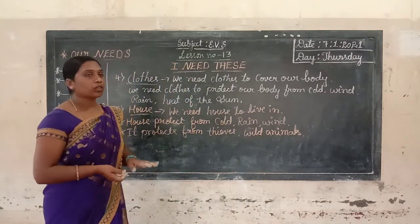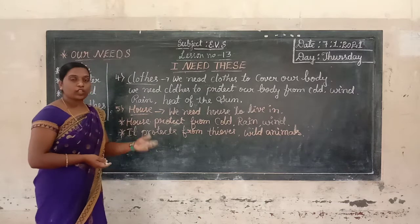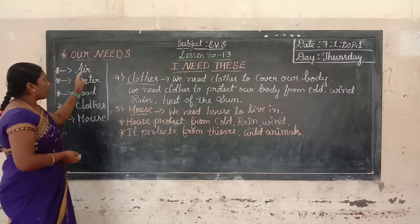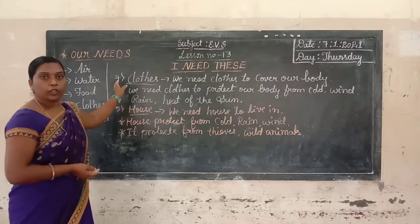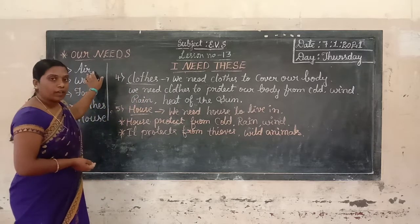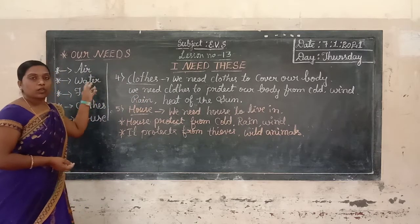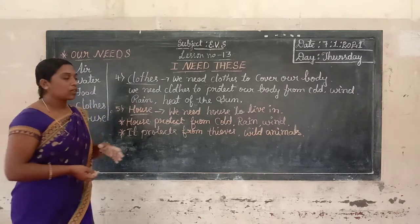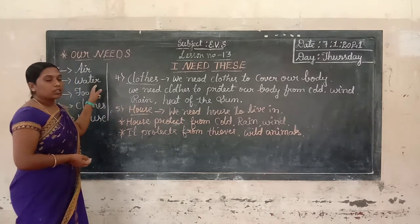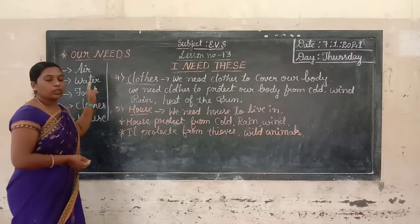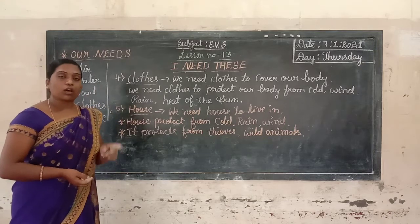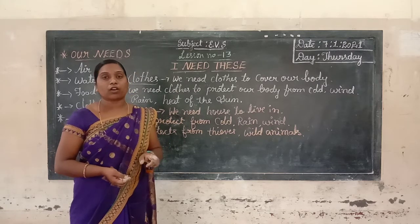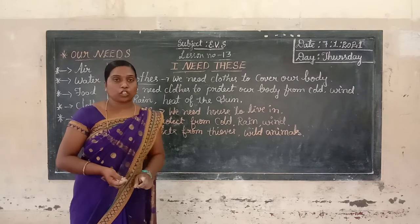In this class we learned about the basic needs: air, water, food, clothes, and house. Air is very important — we need air to breathe. Without air, we cannot live. Water is also very essential for all animals, plants, and birds. Without water we cannot live. Always drink boiled and fresh and clean water. Boiled water kills germs.